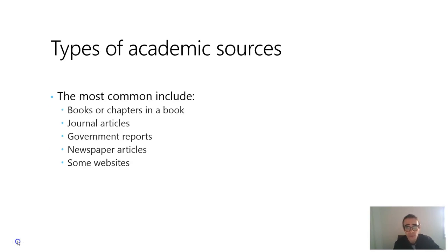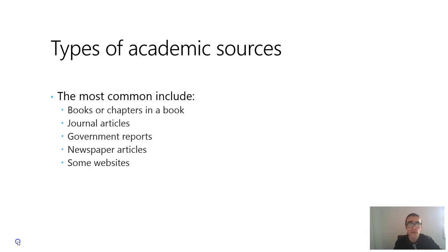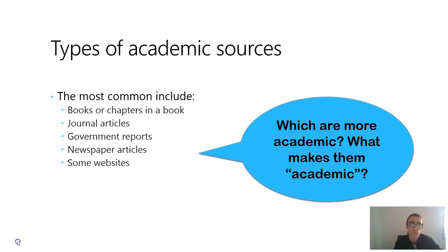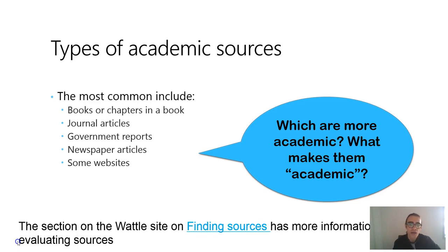The types of academic sources we can use include books or book chapters, journal articles, reports by governments or businesses or organizations, newspaper articles, magazine articles, and certain websites — particularly ones which end with .org, .edu or .gov. It's worth thinking about which are the more academic sources and what makes them academic. On the website you'll find a really useful finding sources resource with information on how to evaluate sources.